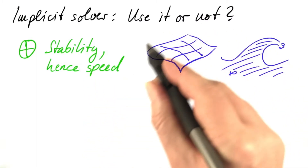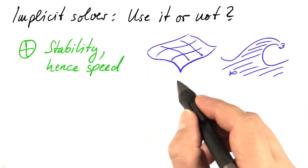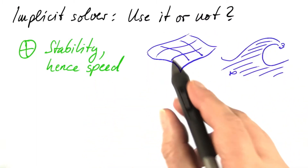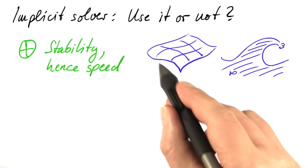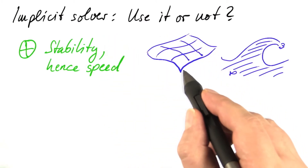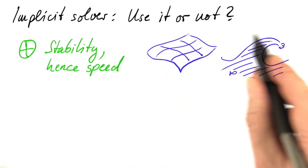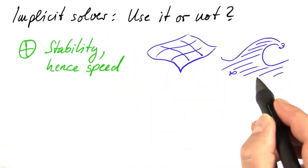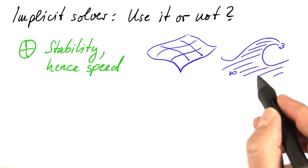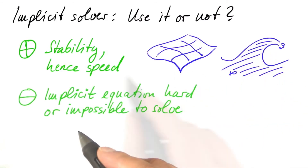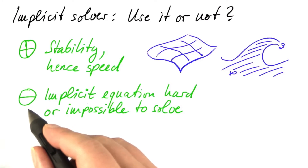Some types of simulation are almost impossible without implicit solvers. Think of cloth simulation and the simulation of water waves. These types of simulation may be forbiddingly slow without the speed offered by implicit solvers.